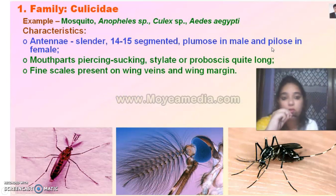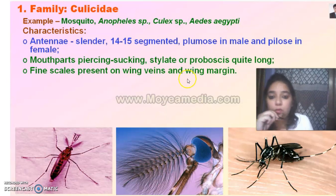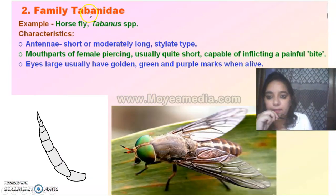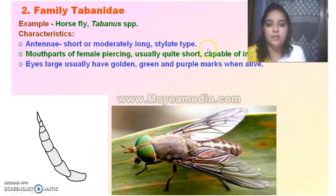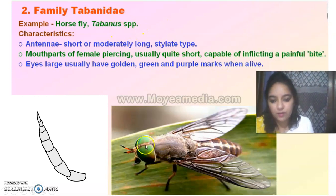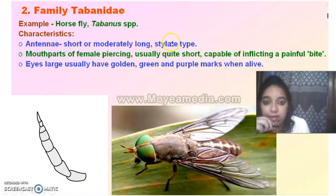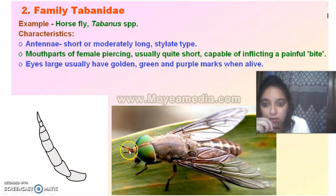So we know the mouthparts are piercing and sucking, with scales present on the wing margins. Then we have Tabanidae — tabanus, the horse fly. It has a stylate type antenna — short and segmented. It will also be piercing. When they bite animals it will cause painful bites. When they are alive they have purple and greenish marks which are very visible. So this is tabanid, the horse fly.